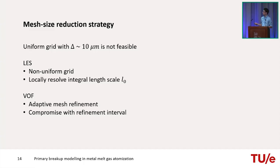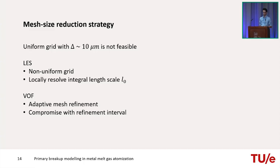The strategy: for LES, use a non-uniform grid with local refinement to resolve the integral length scale — especially close to the nozzle. For VOF, use adaptive mesh refinement to achieve high resolution only near the gas-melt interface. Adaptive mesh refinement adds computational cost through remeshing every few time steps, so a compromise must be found between remeshing frequency and computational time.